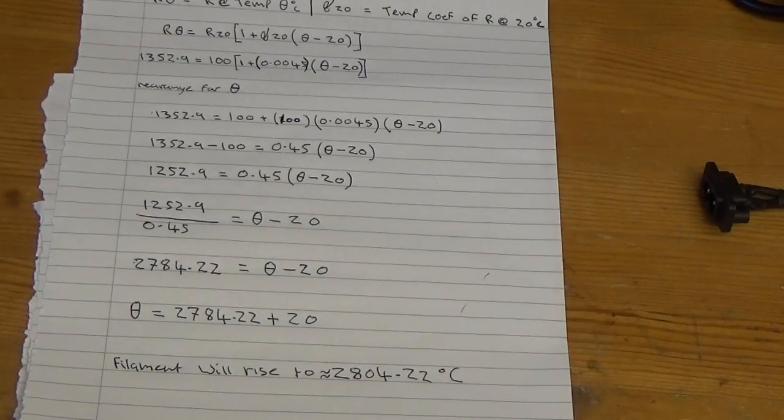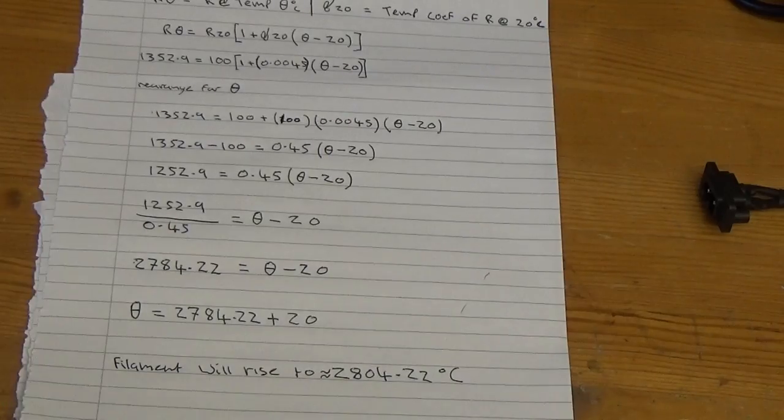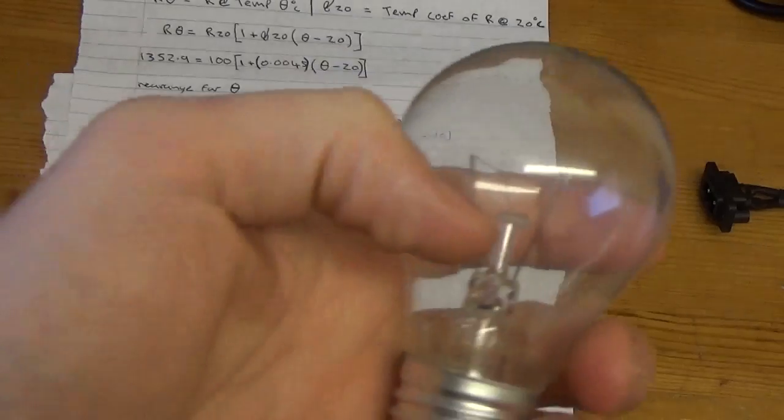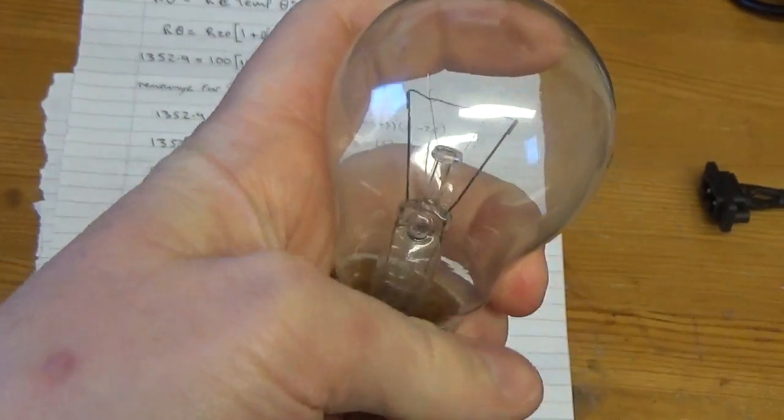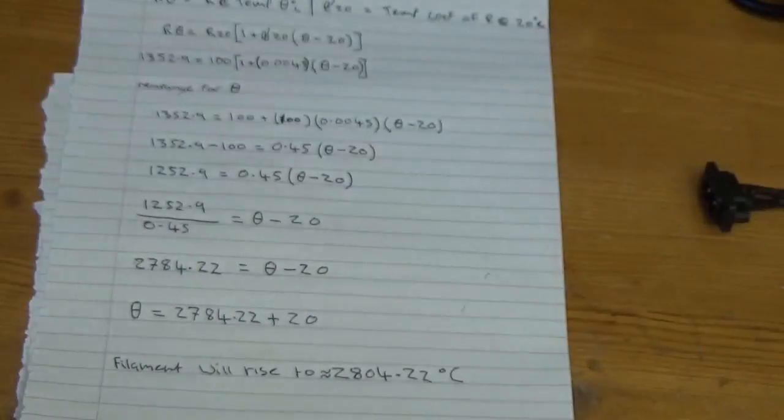So after the rearrangement, I came up with 2804.22 degrees C filament temperature when the light's actually on. It doesn't seem that unreasonable. I believe it is slightly out, that would be due to the actual resistance of the prongs, the lead prongs going up to the actual filament, so it's not going to be precise.